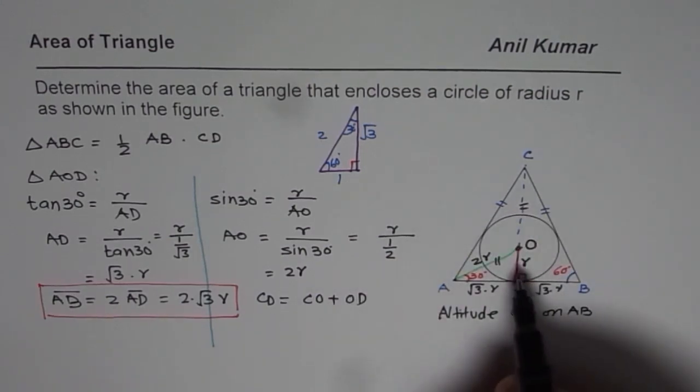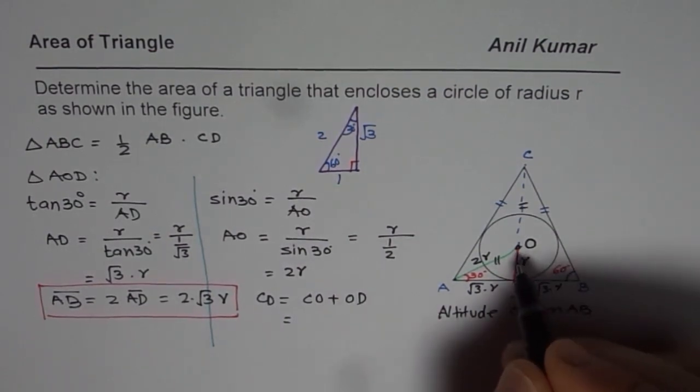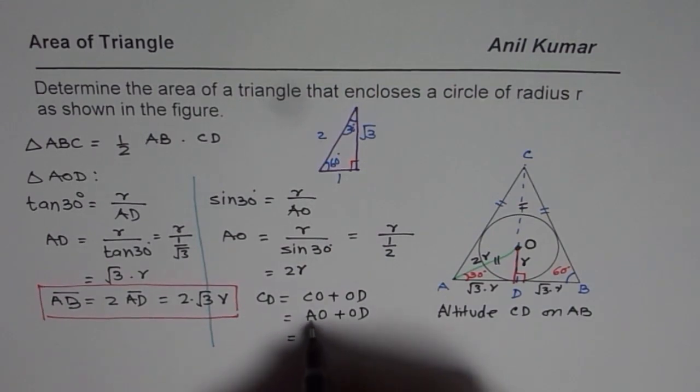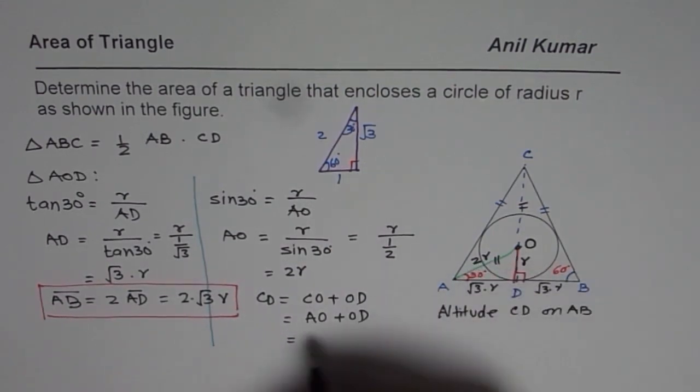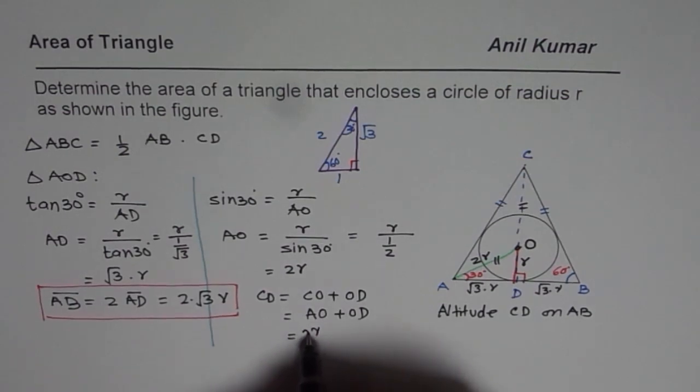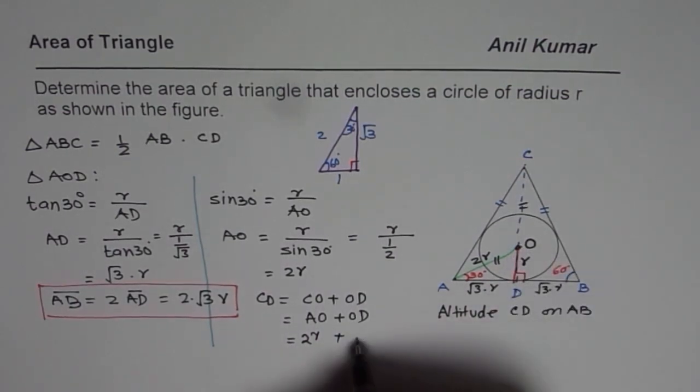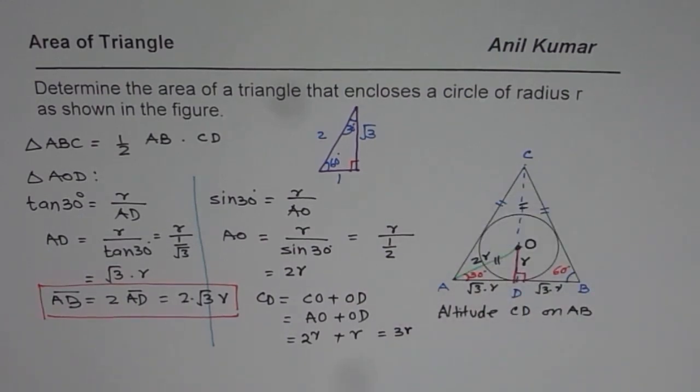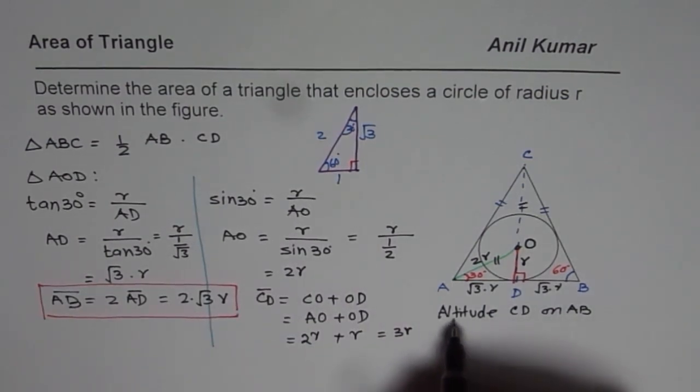So CO is same as AO. We will go one more step: AO plus OD. And AO is 2R, so it is 2 times R plus OD which is R. So when you add you get 3 times R. So the height of this triangle is 3R. So CD is the height of the triangle which is 3R.